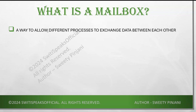The first thing to understand is what is a mailbox. A mailbox can be thought of as a way to allow different processes to exchange data between each other. You can think of it as a real mailbox — someone is trying to exchange some data with you, and once you open the mailbox you will get the mails. It is a way in which different processes can exchange data with each other.